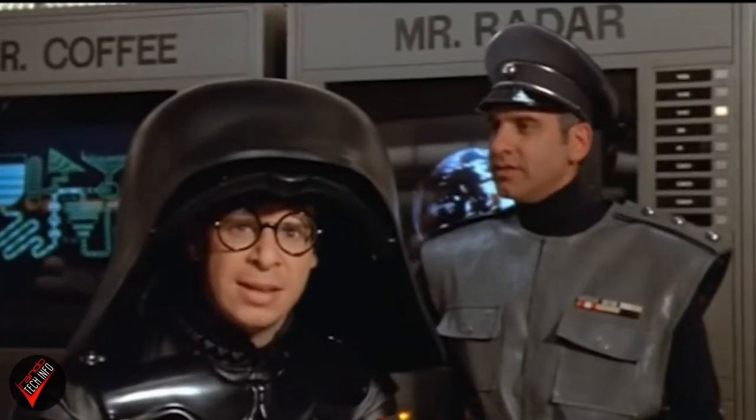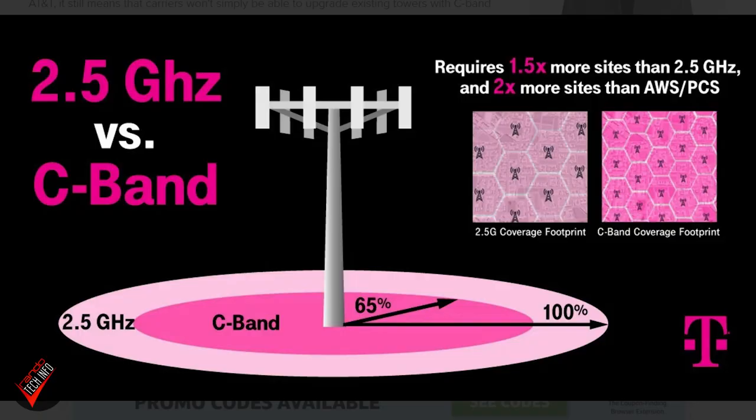As of right now, T-Mobile is the only network carrier here in the U.S. with a significant mid-band 5G footprint. AT&T and Verizon are looking to change this, and that is where C-band 5G comes in. Large chunks of the C-band frequency range were recently auctioned off by the FCC in 2021, and predictably, in order to better compete with T-Mobile, Verizon and AT&T were the big buyers. C-band 5G is a type of mid-band 5G — meaning all C-band frequencies fall under the mid-range 5G frequency range, but not all mid-band frequencies are C-band frequencies. The mid-band frequencies T-Mobile currently uses travel farther than the C-band frequencies that will be used by Verizon and AT&T, but don't carry quite as much data.